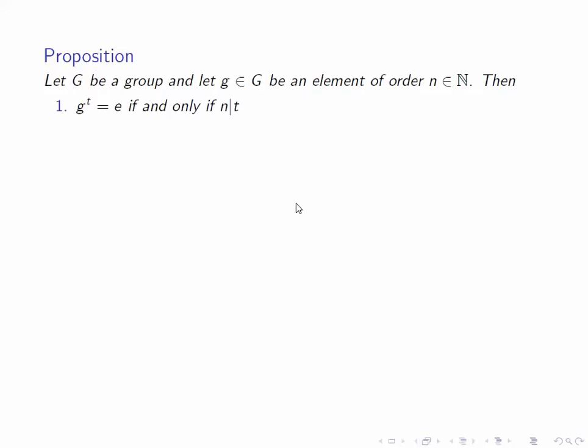Now let's prove some important results about the value of g to the t and when these are the same. First, if we have an element of order n, then a power of g, g to the t, is equal to the identity if and only if n divides t. Secondly, more generally, g to the t equals g to the s if and only if t and s are congruent mod n.